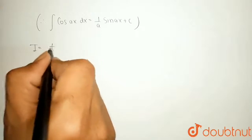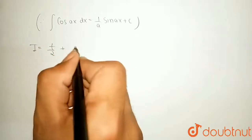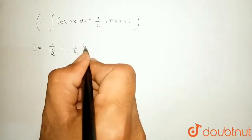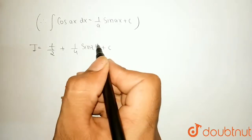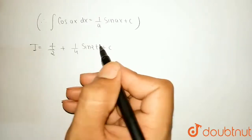So, the value of integral becomes t by 2 plus 1 by 4 sin 2t plus c where c is our integration constant.